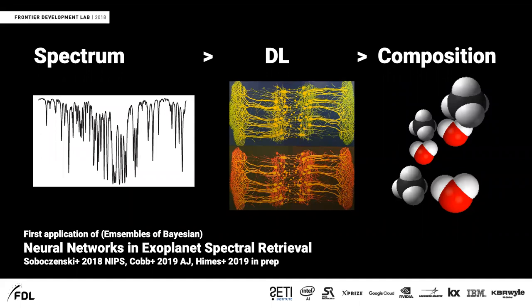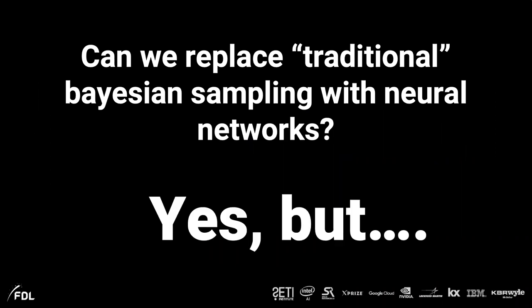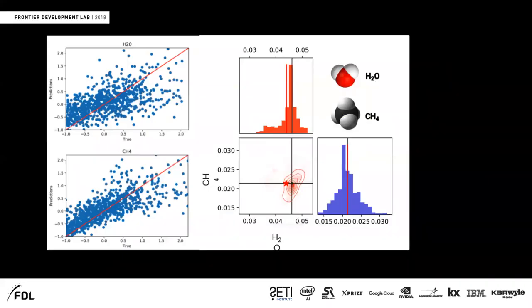And all the details are in these papers by Frank, Adam, and Mike in preparation. So we use so-called ensembles of Bayesian neural networks. I don't want to go too much into the details. If you have questions, I'm around, let's talk about the details. So the basic question was, can we replace traditional Bayesian sampling methods with neural networks? And the quick answer is yes, but there are a couple of caveats. So first order it works. So we trained a neural network, basically told it, these are the three million spectra and these were the compositions we put in. And then you can give the network a spectrum and it tells you what it thinks the atmosphere is made of.